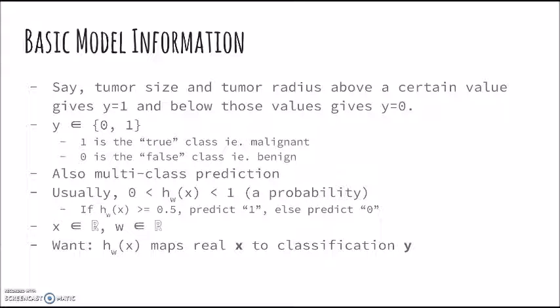Some basic model information is included here. As discussed, the targeted outputs should belong to discrete classes. For example, just a 0 or a 1. This is binary classification.